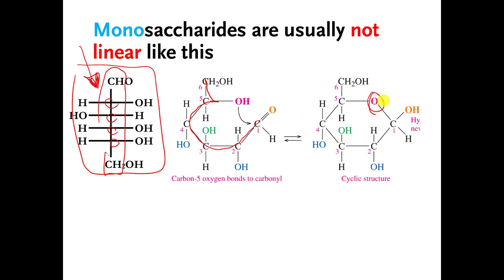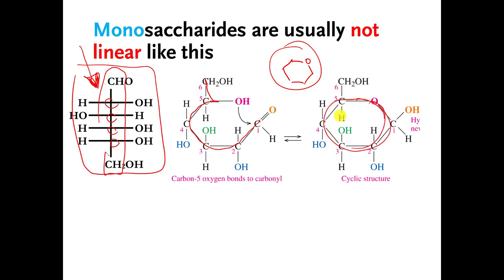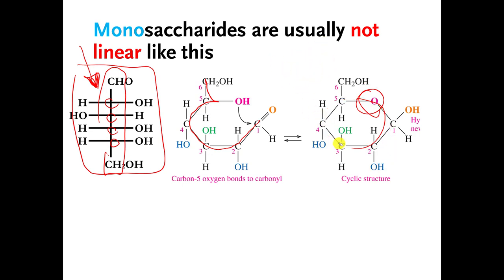For most monosaccharides, usually there's an oxygen atom that is part of the ring. In one of the earlier videos when I was talking about monosaccharides, I said this was going to be my cartoon for a generic monosaccharide. The reason is because most of the time the carbons wrap around and connect to each other with an oxygen somewhere. Traditionally, you draw the oxygen at the top of the ring, and if it's unbalanced you put it on the right side.